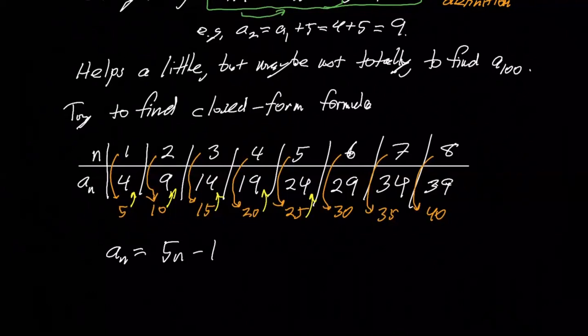And so that tells us pretty much immediately that a sub n is five n minus one. That's our function. And so this is the closed form formula for the sequence that we started with.